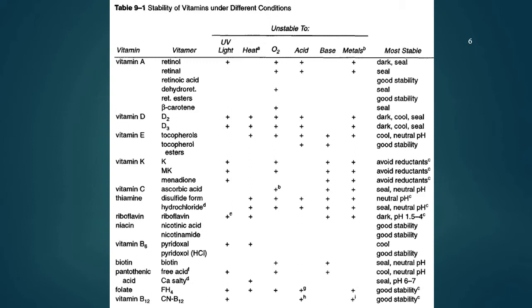Vitamin D is easily destroyed by most parameters except base. So to store vitamin D, it should be stored in a bottle that is dark, cool, and also sealed.